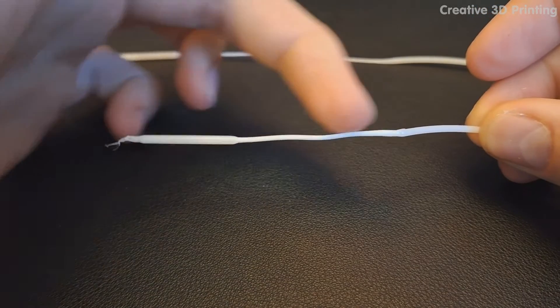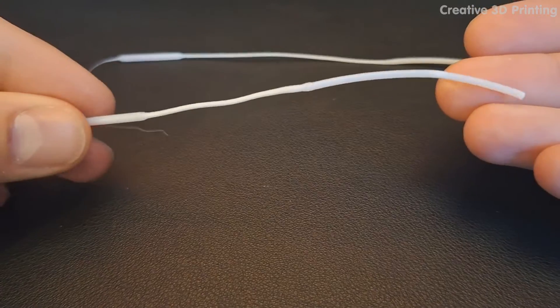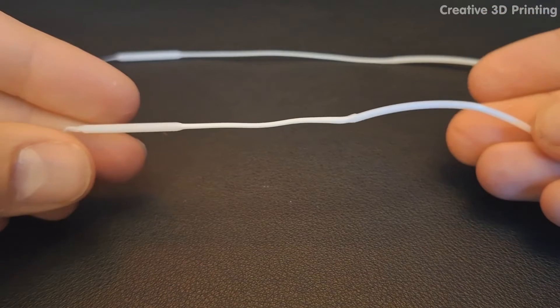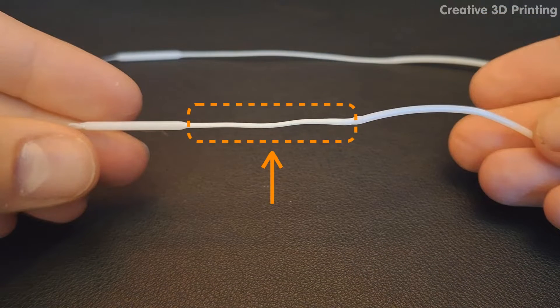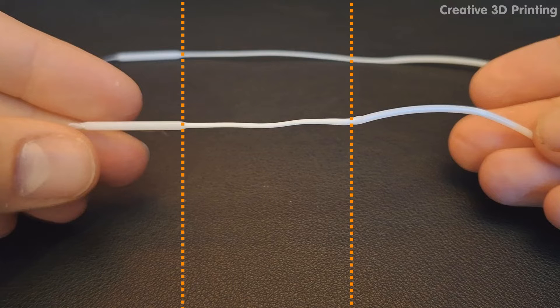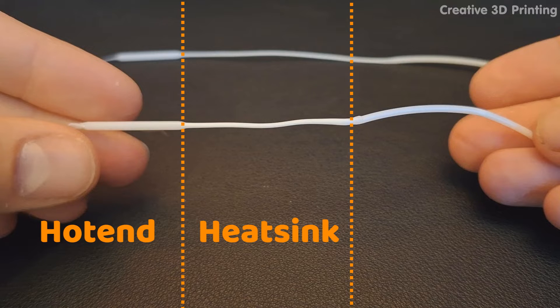On the left you see the normal diameter of the filament and on the right you can see that too. In between it has melted and you can see that because the diameter is smaller there. If we divide this piece of filament into three parts, we see that on the left side the hotend was, where it should normally be the hottest. In the middle you have the heatsink, where it should normally be colder.